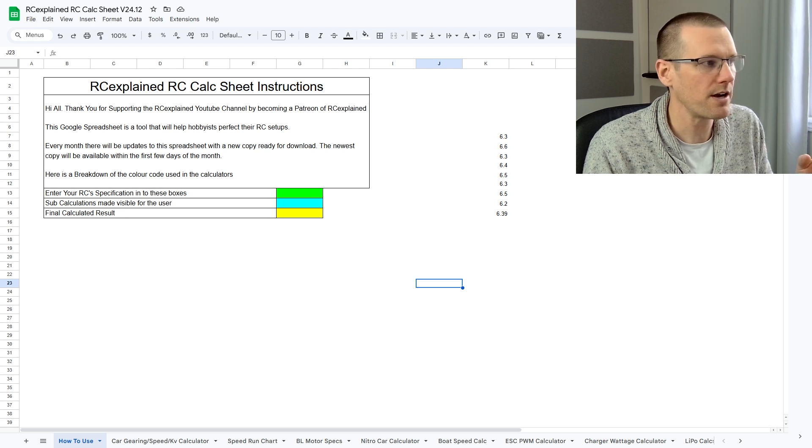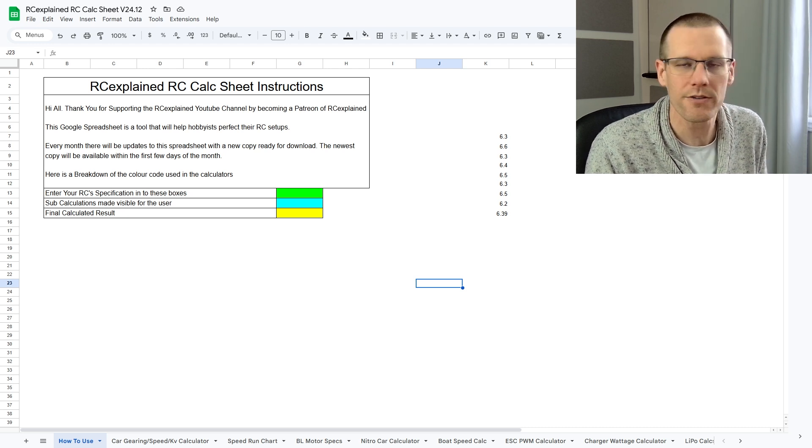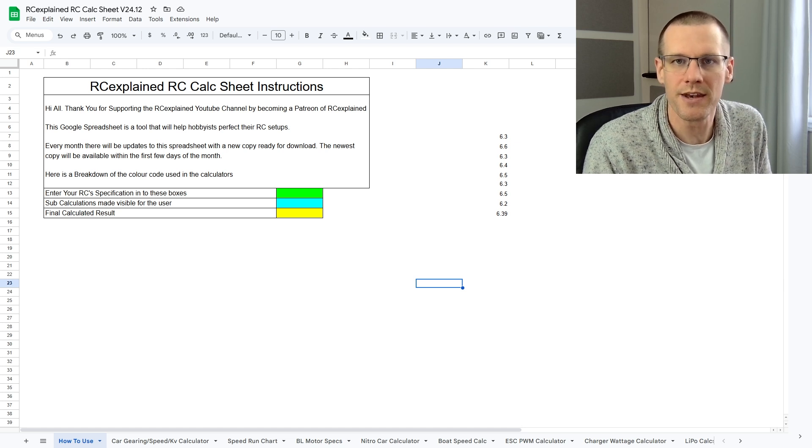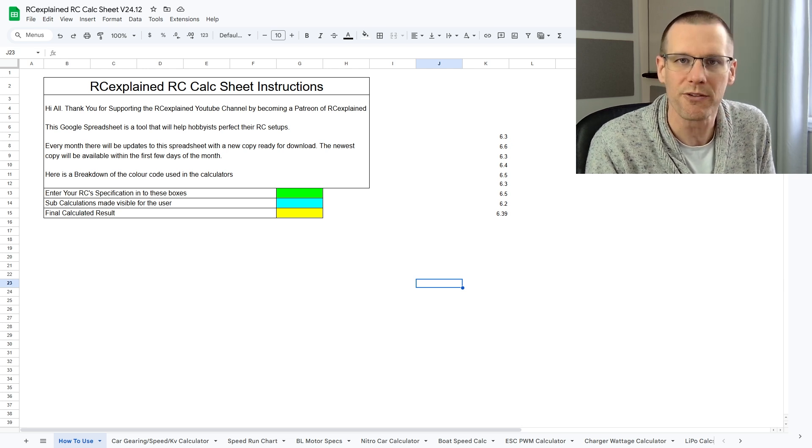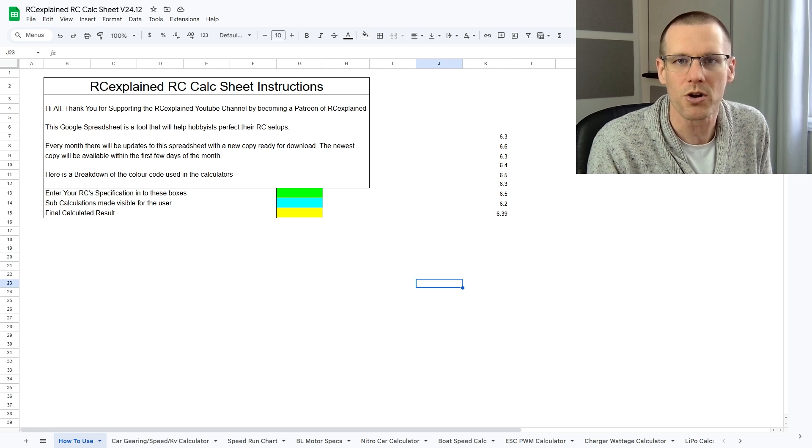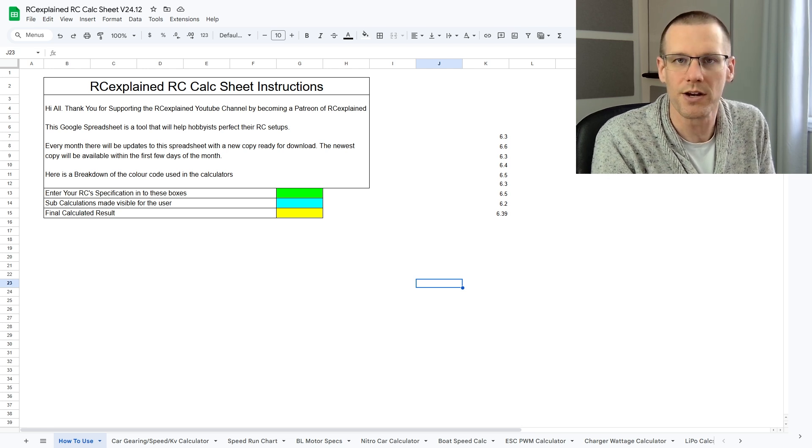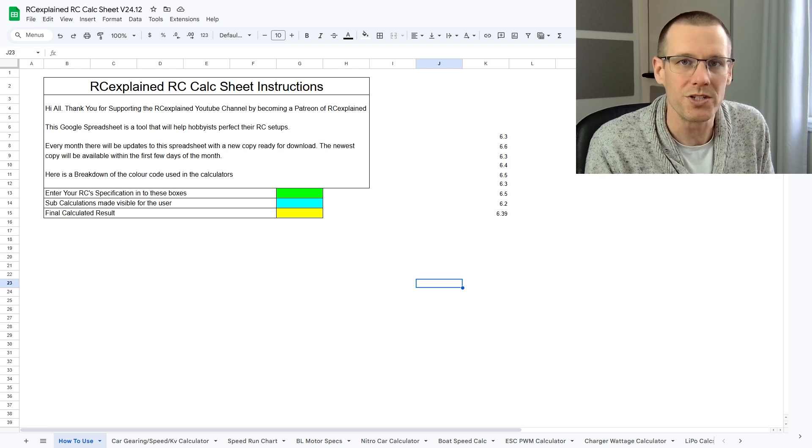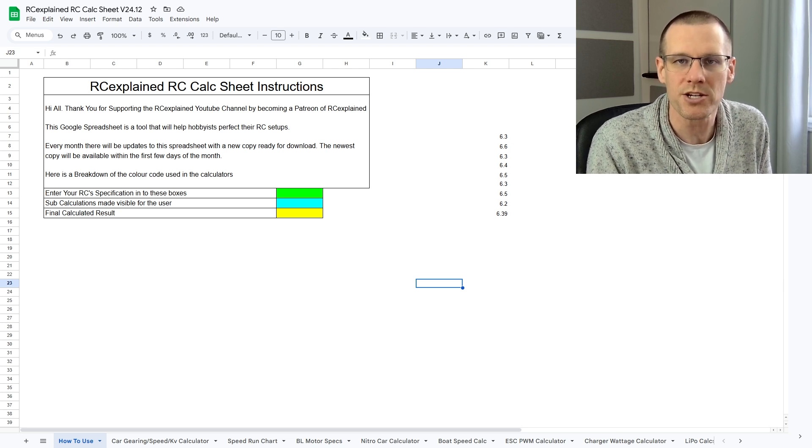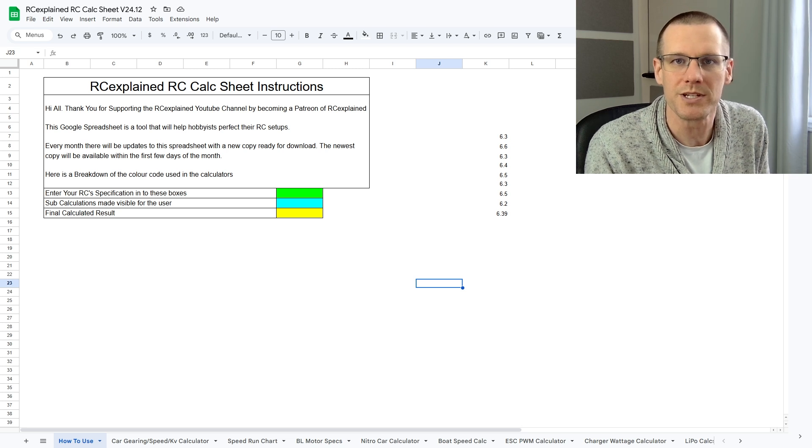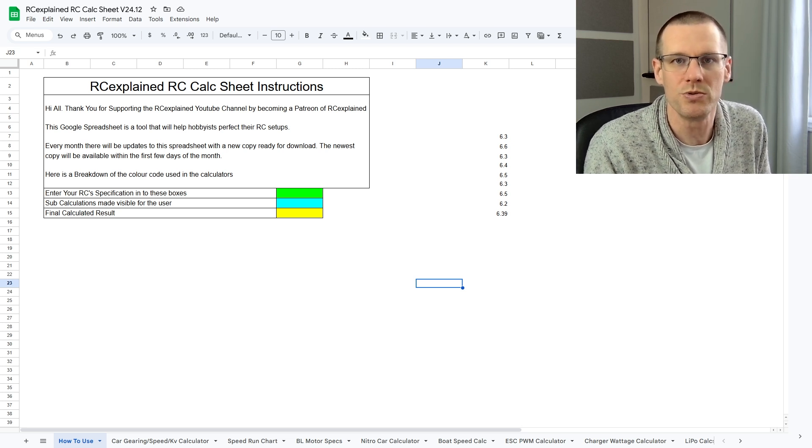Here we're taking a look at the RC Calc sheet version 24.12. This version of the sheet is going to be released here in the next several days. I'm going to put it, of course, on the Patreon site. If you're a member of that site, you're going to be able to download a copy for yourself and use everything that we're going through here in this very next couple minutes. Now, if you're a member of tier two, you will also have access to download the battery spec sheet. This is going to have all the performance data of the batteries that we've tested up to today.